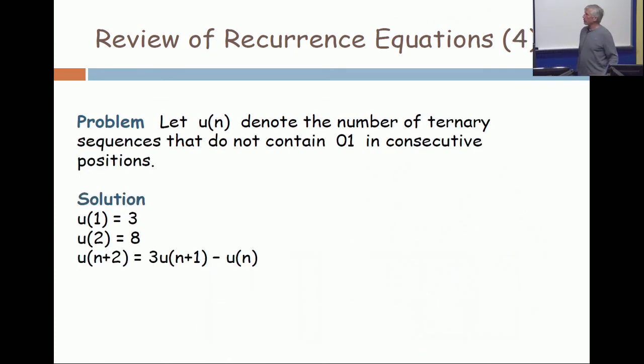And let me close with this fourth example where I don't have a picture. But this is the kind of thing we did where the number of ternary sequences that do not contain 0, 1 in consecutive positions. u(1) is 3, they're all good. u(2) is 8, there's 1 of the 9 which is bad. And then we got the recurrence: u(n+2) is 3u(n+1) minus u(n), because remember, it was three things, but you overcounted it and you have to take off the overcounting.